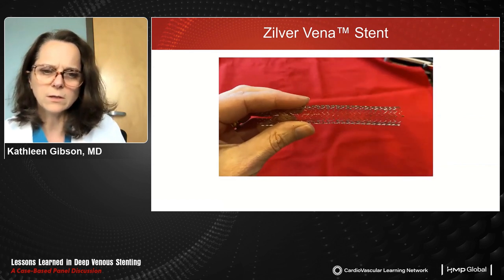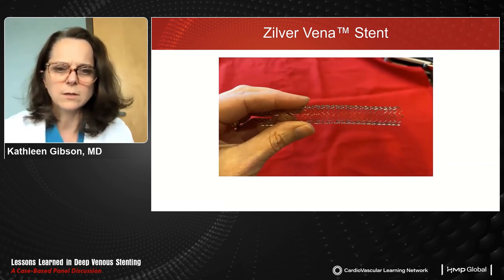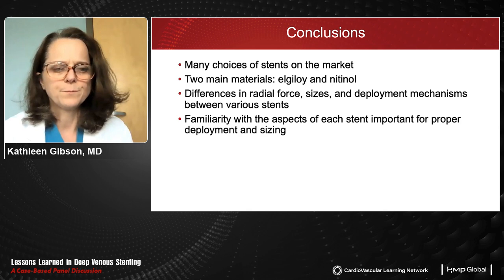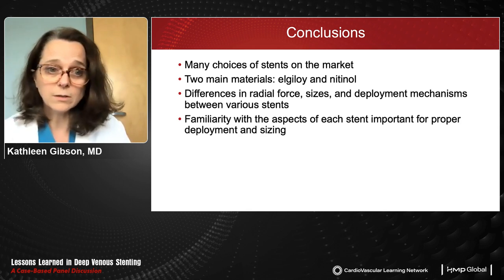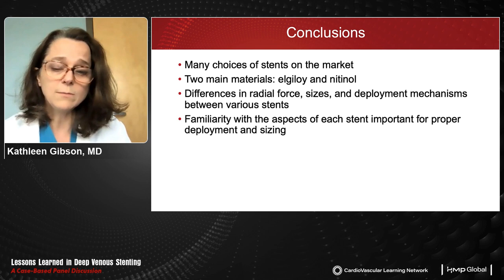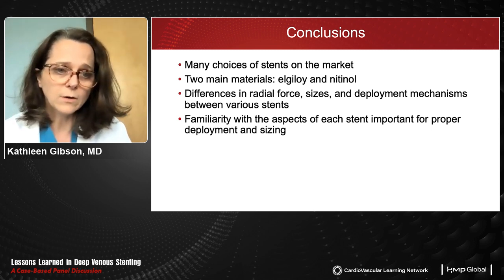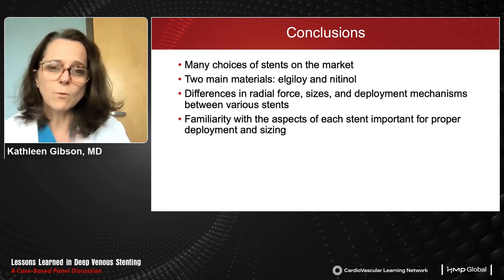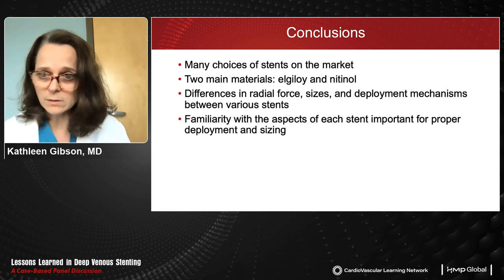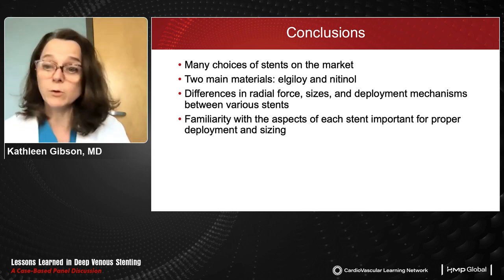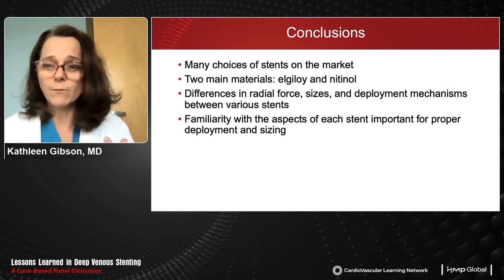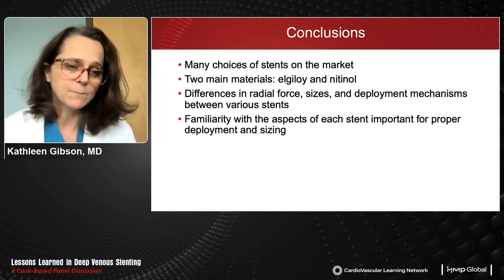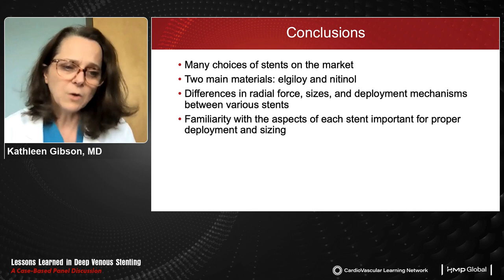In conclusion, there are many choices of stents on the market. The two main materials are Elgiloy and Nitinol. There are differences in radial force, sizes, and deployment mechanisms that you should be familiar with. It is really important for proper patient selection and understanding how to deploy and to size these stents.